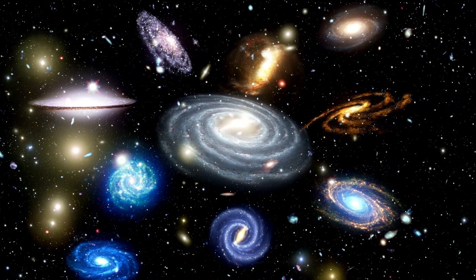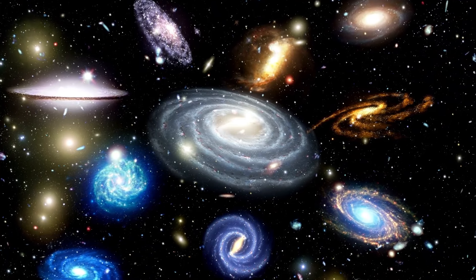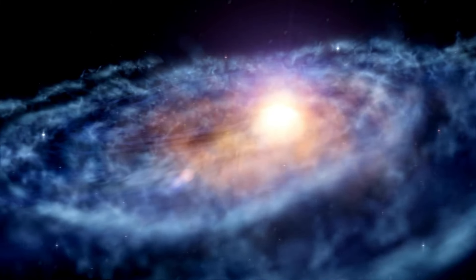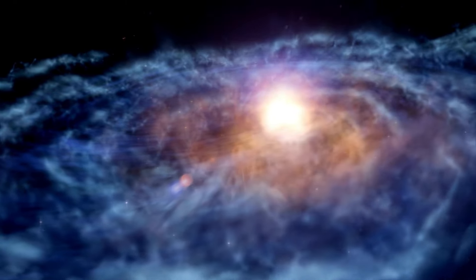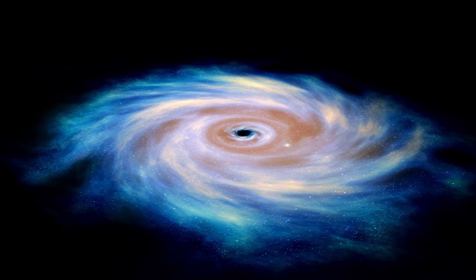Betelgeuse, around 650 light-years away in Orion, isn't just any star. It's a red supergiant, incredibly bright, over 100,000 times brighter than our sun. But why does it matter?